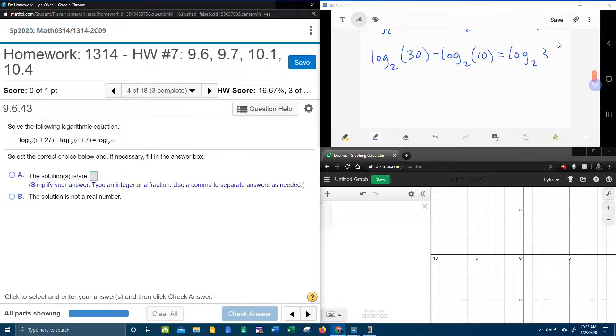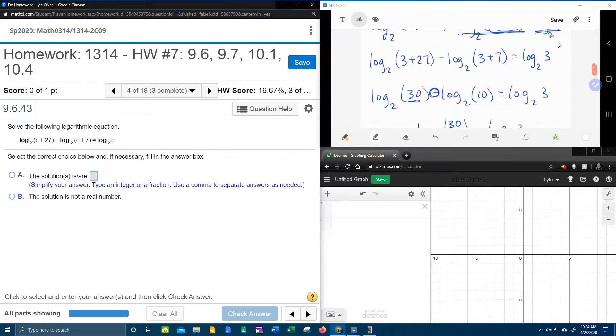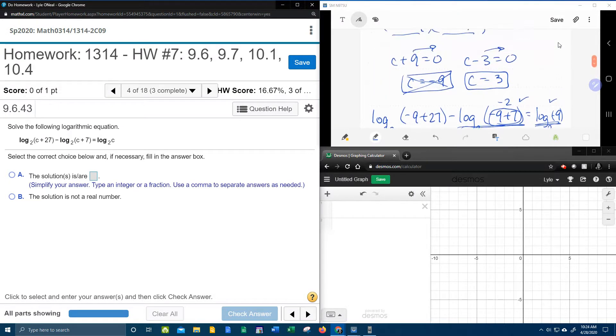And then I could use my calculator, but I'm going to pretend like I don't have one or you're not allowed. And so what I'm going to do is I'm going to remember the quotient rule. Remember subtraction turns into a fraction where the 30 goes on top and the 10 goes on bottom. And we're going to see if this simplifies to be equal. 30 divided by 10, that's 3. So does the log base 2 of 3 equal the log base 2 of 3. Those are identical. That checks out.